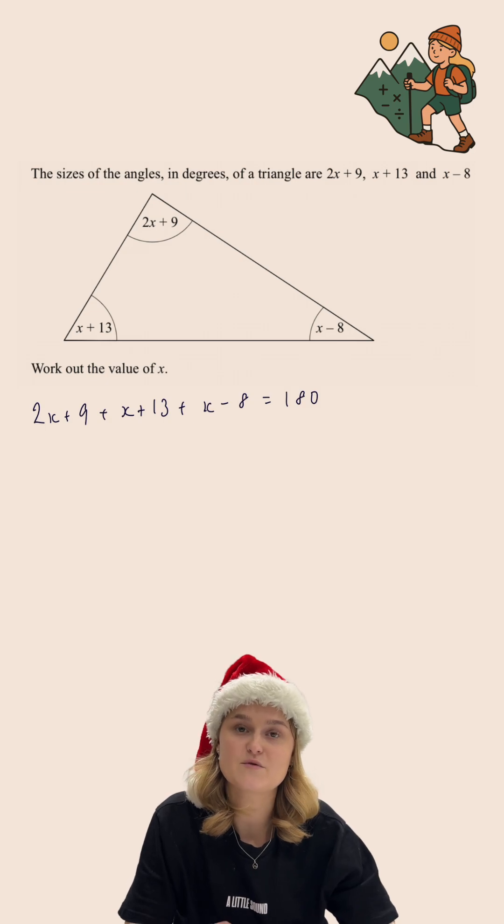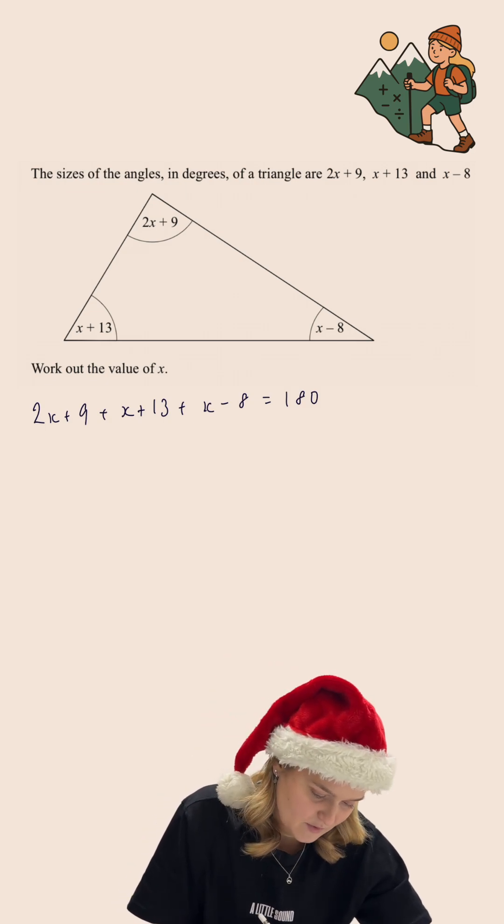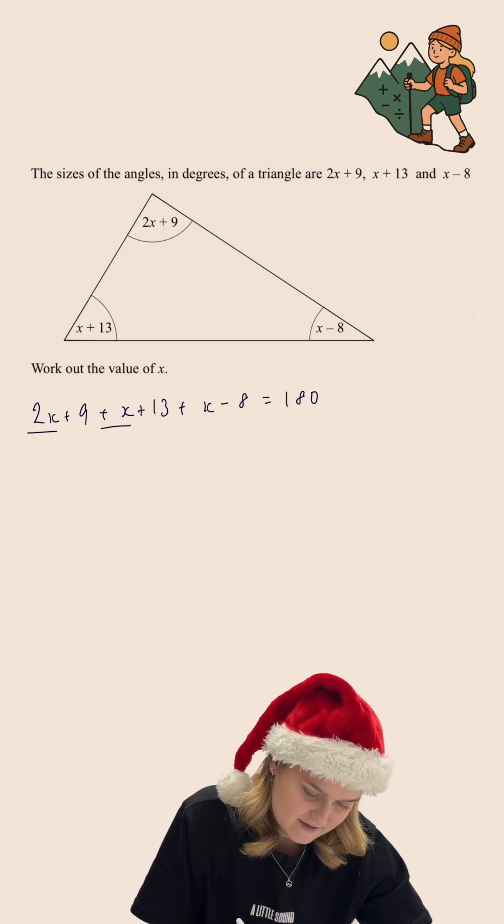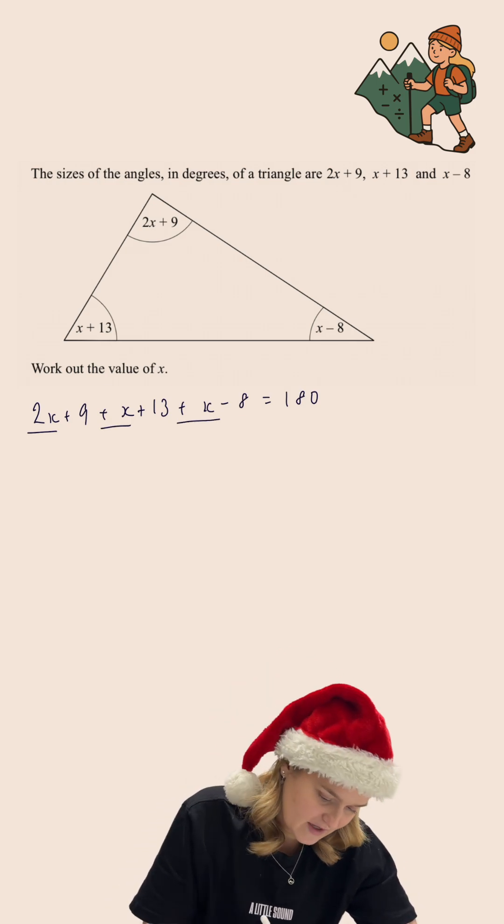We've now formed an equation which we can solve. Before we solve this I'm going to simplify it. So we have 2x add x add x. In total that is 4x.